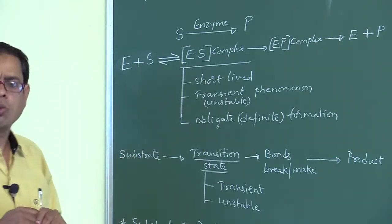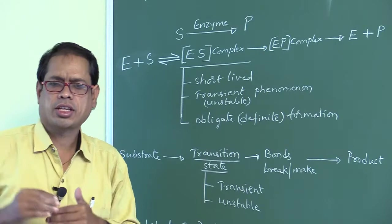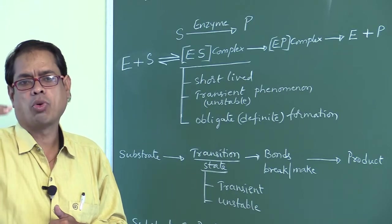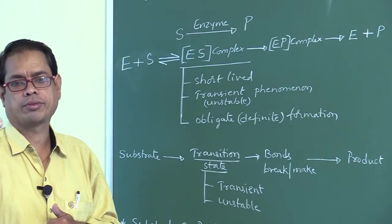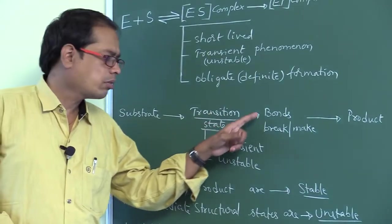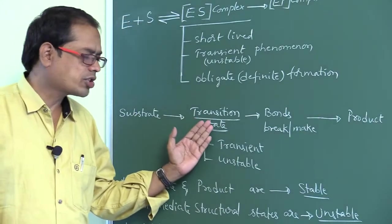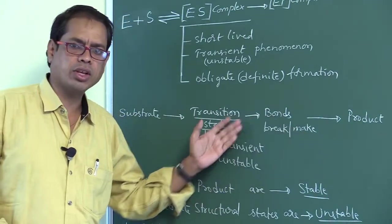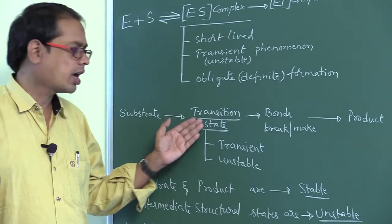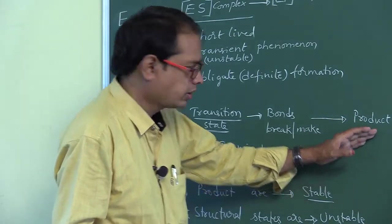Whenever the substrate binds to the active site of an enzyme, the substrate reaches a new state called the transition state. In the transition state, the bonds present in the substrate are broken and new bonds are formed, resulting in products. The correct sequence is: substrate reaches the transition state, bonds break and form, then products are formed.